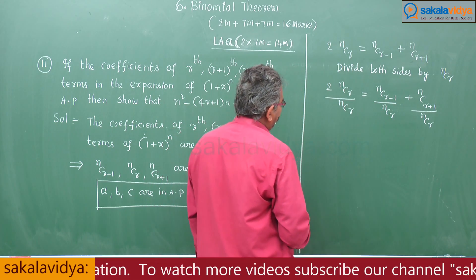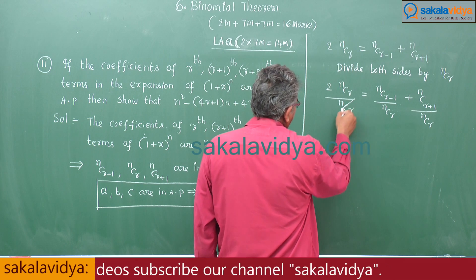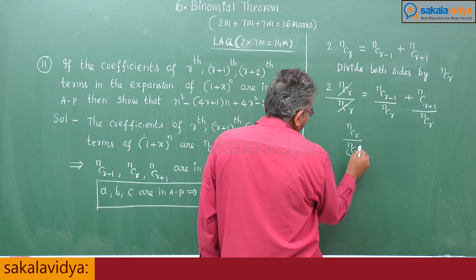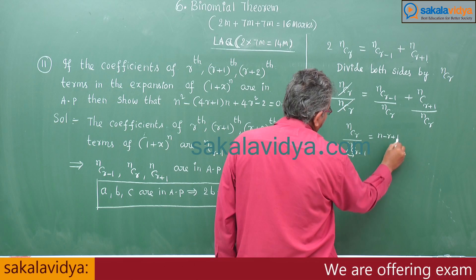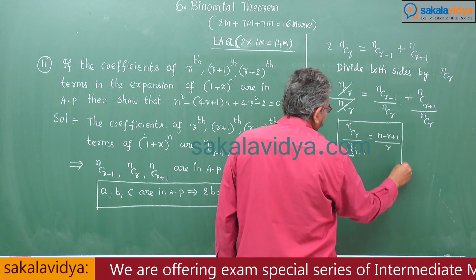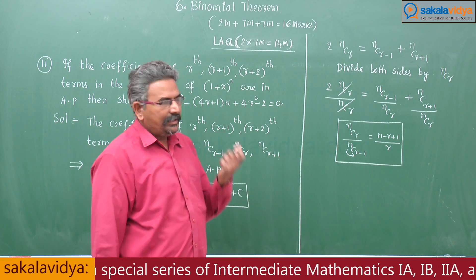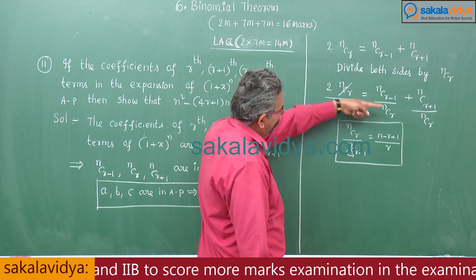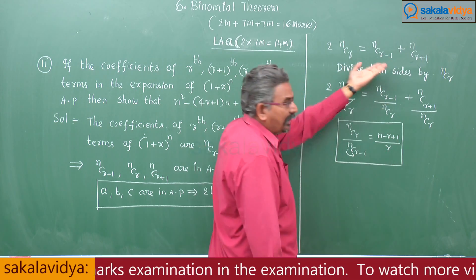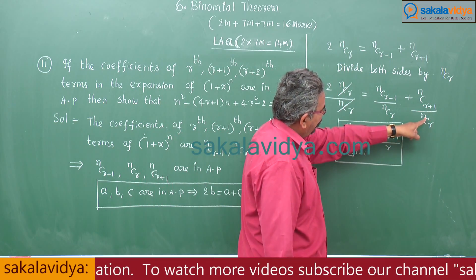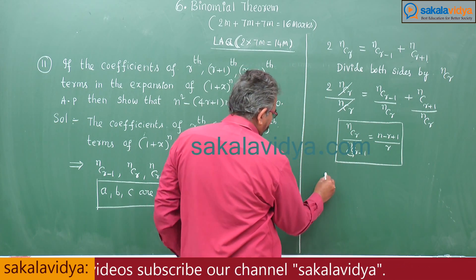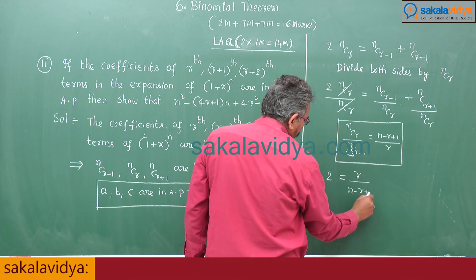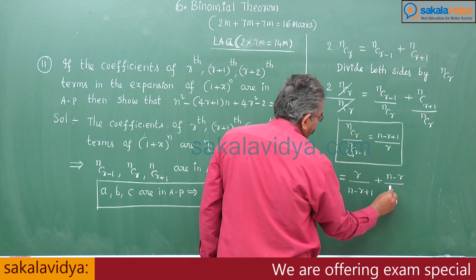We have the shortcut: nCr/nCr-1 = (n-r+1)/r, so its reciprocal nCr-1/nCr = r/(n-r+1). And nCr+1/nCr can be replaced by (n-r)/(r+1). So we get: 2 = r/(n-r+1) + (n-r)/(r+1).